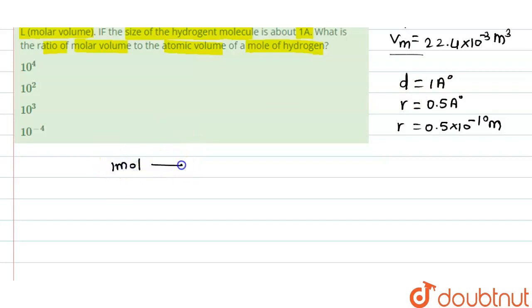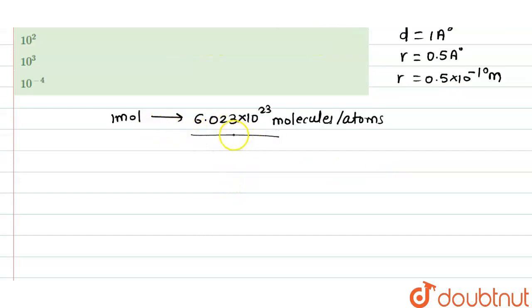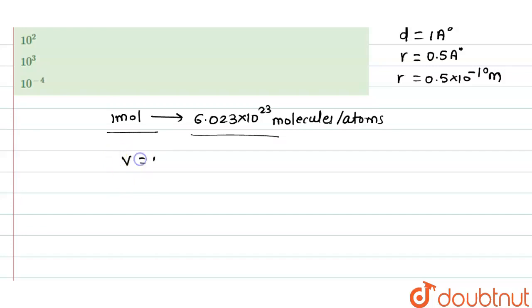One mole of hydrogen gas contains 6.023 into 10 to the power 23 molecules or atoms of that particular gas. So we consider there are this many hydrogen atoms present in one mole of hydrogen gas. We can first calculate the volume for a single hydrogen atom using the formula V equals 4 by 3 into pi r cube.